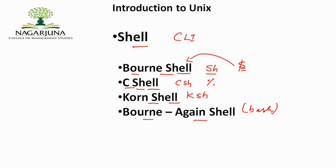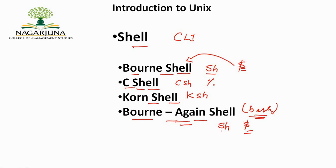The Bourne Again shell, generally called bash, is the default shell on most Linux operating systems. It is a freeware shell that executes files using the command 'sh' and is prompted with a dollar symbol. If you find a Linux operating system prompted with a dollar symbol, it is the bash shell.